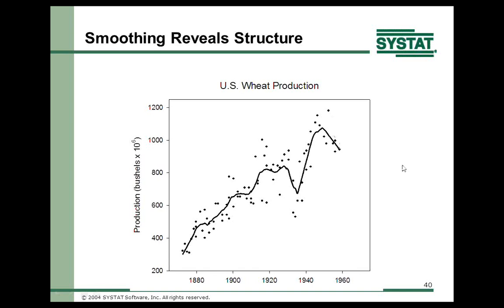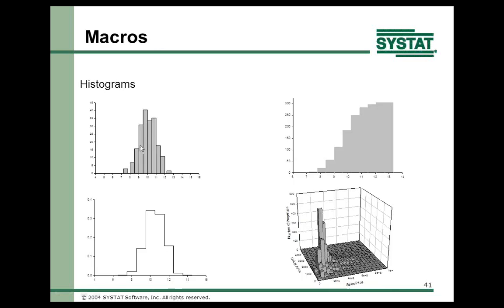You can generate histograms of different types using a macro — there's a built-in histogram generator in Sigmaplot, but a macro can also produce different histogram types including cumulative and three-dimensional.